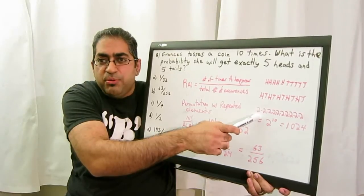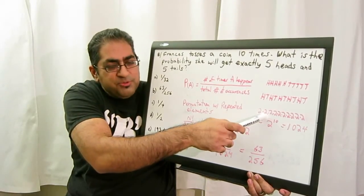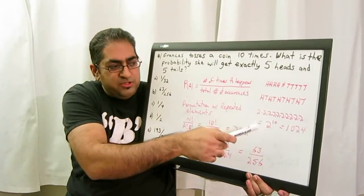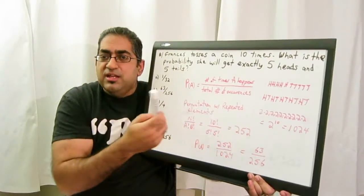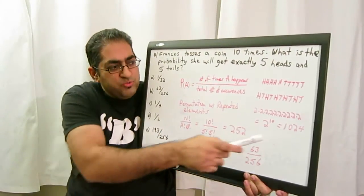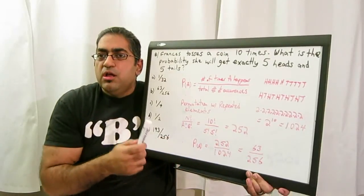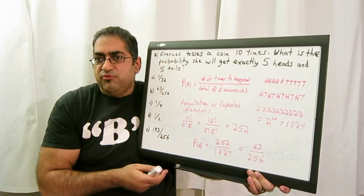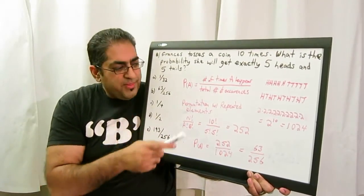Every single coin toss gives you two possibilities. Every subsequent coin toss gives you two more possibilities. So two times two times two times two. Ten coin tosses is two to the tenth power. So there's 1024 possible occurrences for the coin toss. That's the first part. That's the bottom part.